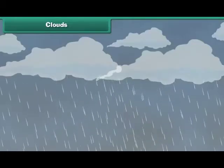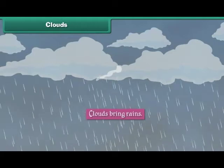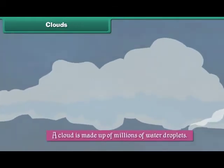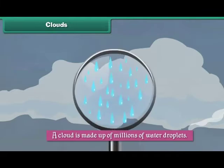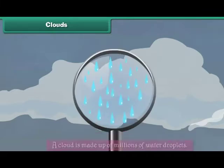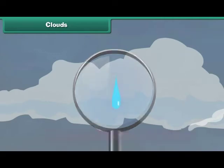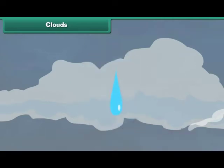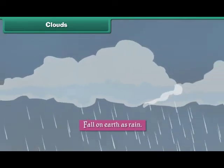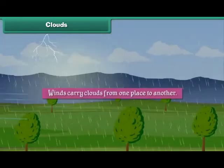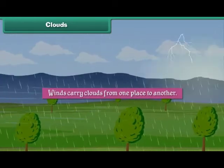Clouds bring rains. A cloud is made up of millions of water droplets. Many water droplets combine to form water drops. As the drops grow in size, they become heavy and fall on earth as rain. Winds carry clouds from one place to another.